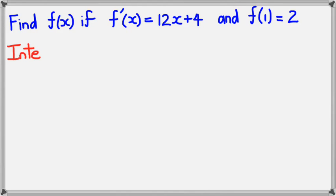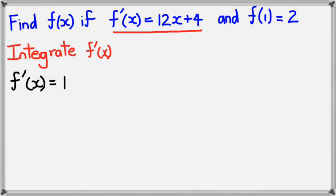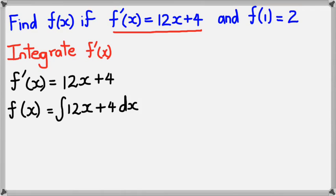Alright, so the first step is we are going to integrate f dash of x first. So when we do that, this is what we're going to get. So f of x would be the integral of 12x, which equals 12x squared divided by 2 plus 4x plus c. Now this could be simplified to 6x squared plus 4x plus c.